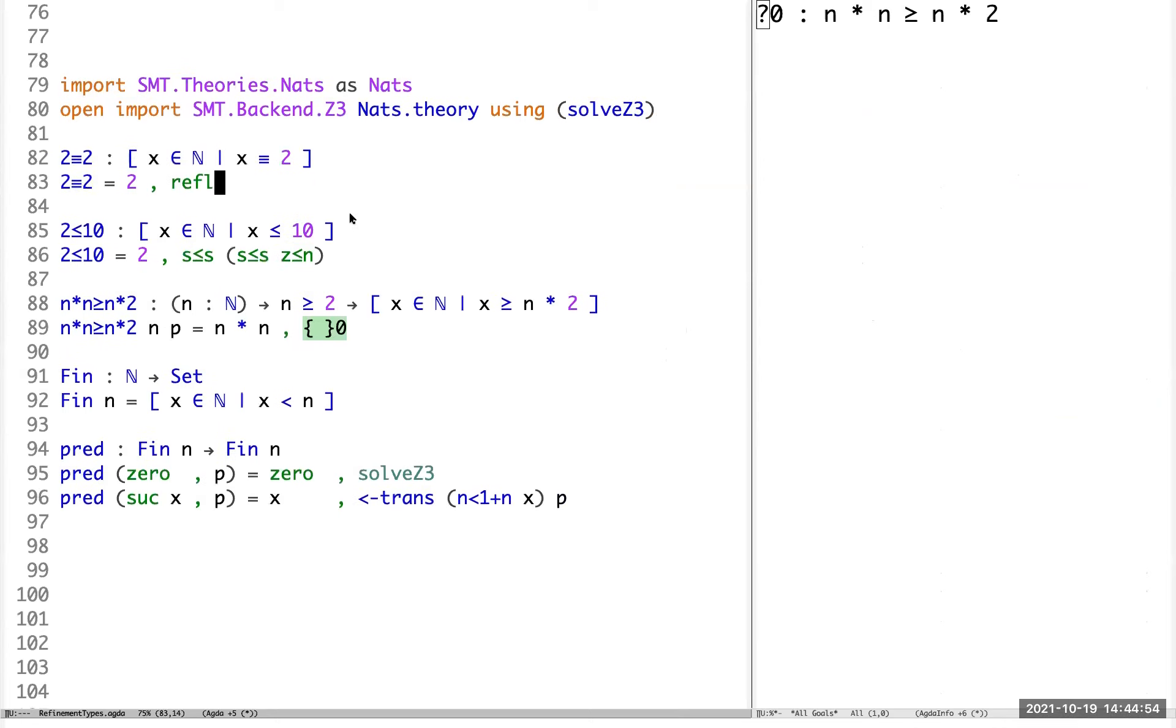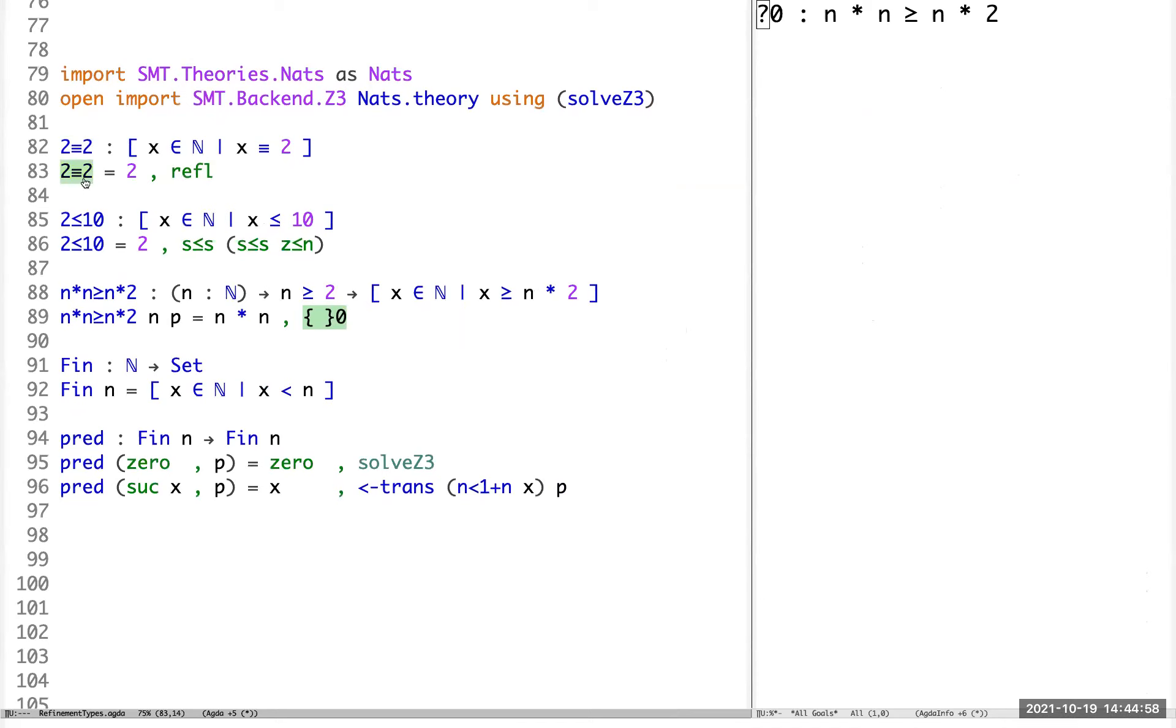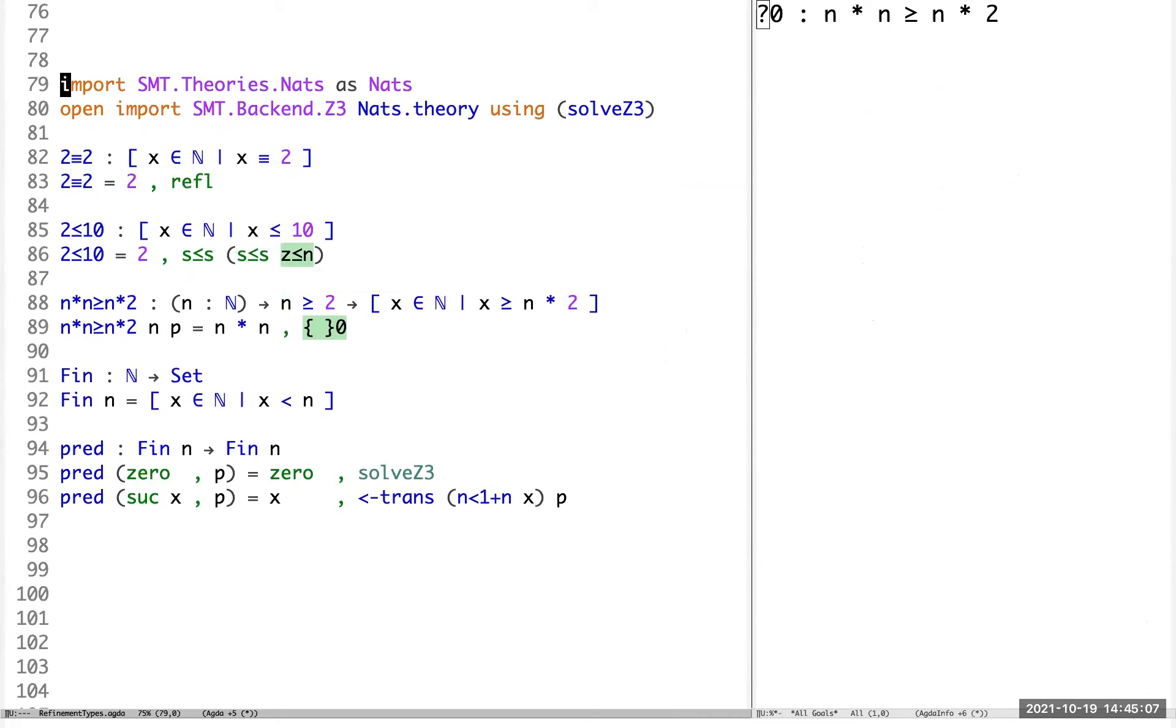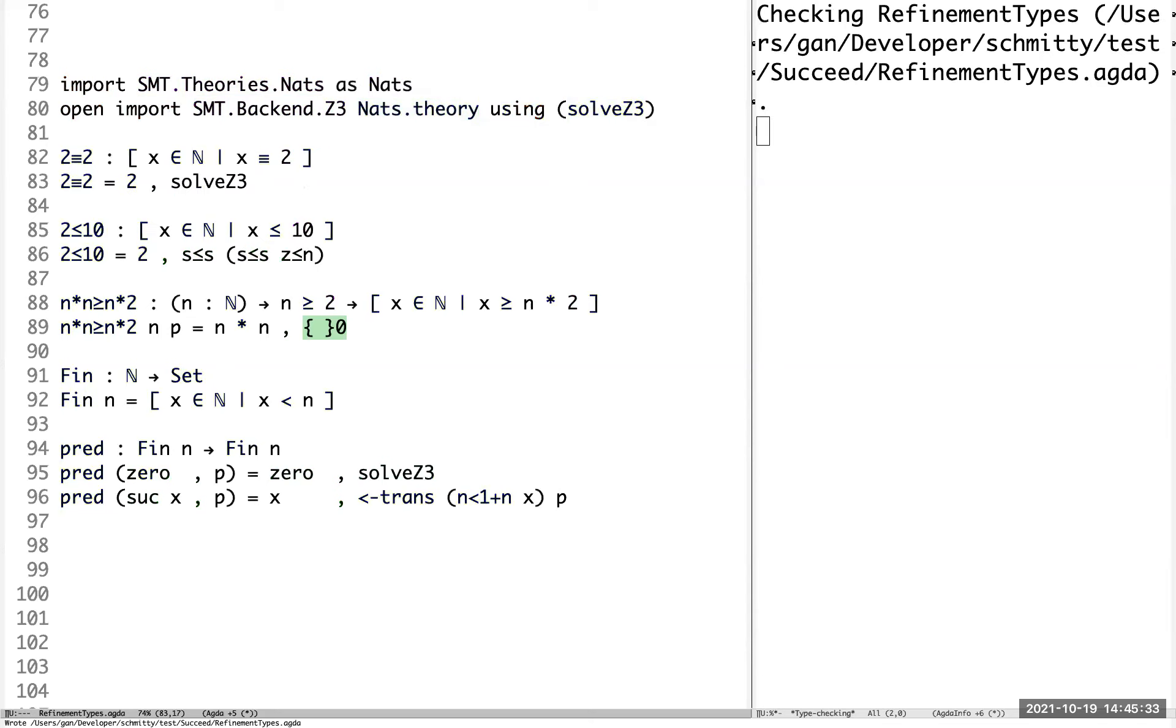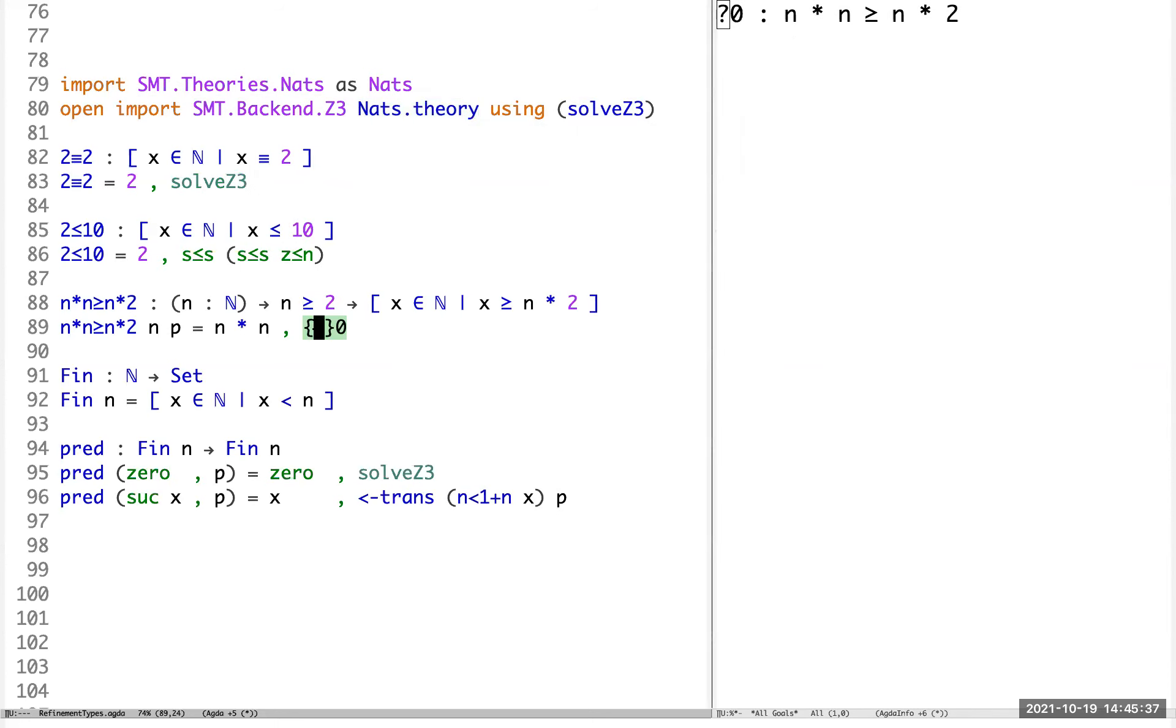So here I have the exact same code. I have a natural number equal to 2, a natural number less than 10, and so on. So to use Schmiddy, first we need to decide which theory we are using. Here we are importing the natural number theory, and then we use this natural number theory to instantiate the Z3 backend. So we are using the Z3 SMT solver. And after importing this module, it provides this solveZ3 macro. So instead of writing the proof manually, we can use solveZ3 macro to help us type check this program. Here we can also use solveZ3 to help us finish the program. And same here. And not only solveZ3 can help us automate proofs, it can also show us counterexample when there's no proof.